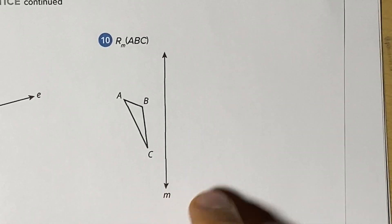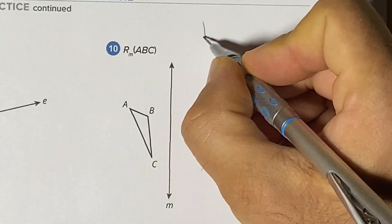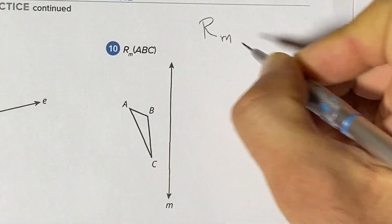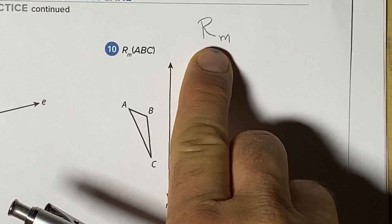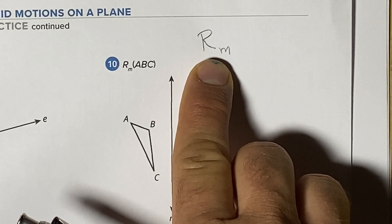Here we want to take a look at how to do a reflection. We know it's a reflection because of the capital R and then the letter in the corner. There's no number. A number would indicate a rotation because rotations have degrees.